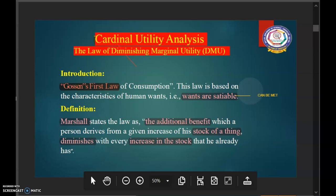Gosen, he was an Austrian economist. He was the first to formulate this law in economics in the year 1854. Therefore, this law is also known as Gosen's first law of consumption.